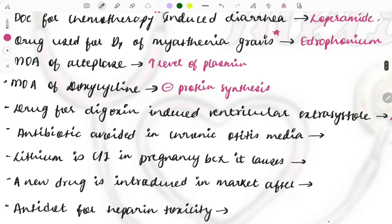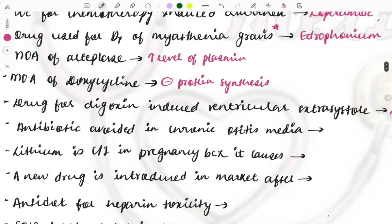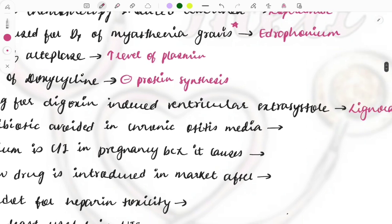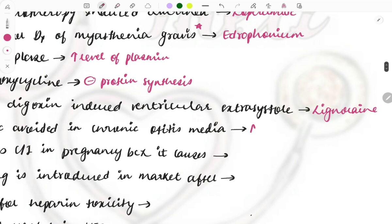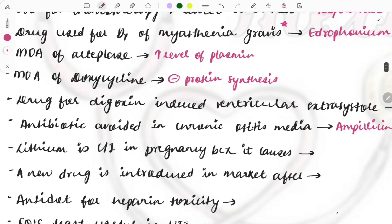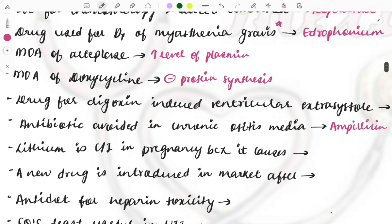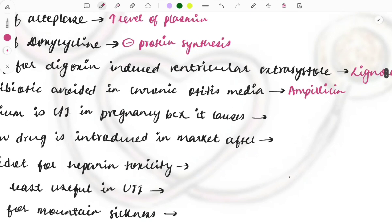The antibiotic avoided in case of chronic otitis media is ampicillin, because ampicillin is ototoxic and in case of otitis media we cannot give it. Lithium is contraindicated in pregnancy because it causes Ebstein's anomaly — the congenital defect caused by lithium is Ebstein's anomaly.